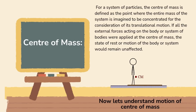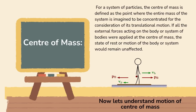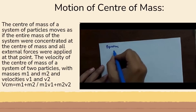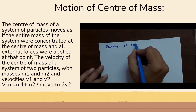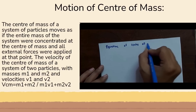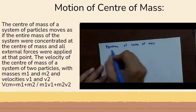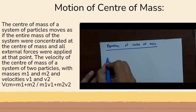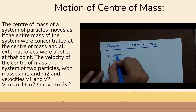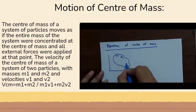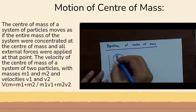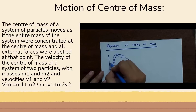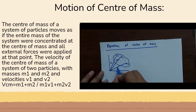Now let's understand motion of center of mass. We are going to see the equation of center of mass. We will consider a body with particles M1, M2, and Mn. M1 is at position vector R1, M2 has position vector R2, and Mn has position vector Rn.